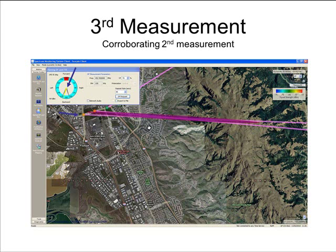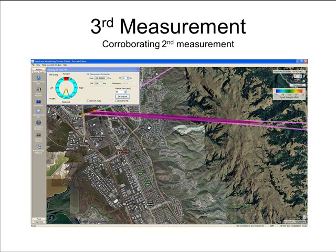Again 45 seconds later, the system has taken another direction finding measurement. This bearing measurement crosses the bearing taken in the preceding measurement, and a fixed point is calculated and presented in both text form in the top right-hand corner of the screen and drawn on the map, along with an error ellipse. The error ellipse is quite large because the intersection angle of the two measurements is very acute. The signal strength is higher than the initial measurement but not quite as high as the second measurement. The emitter still appears to be coming from behind the vehicle.